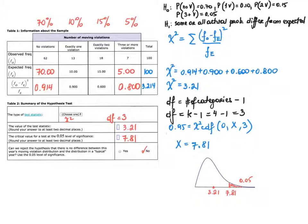The next question asks for the critical value. Just as you have found critical values using Z and T distributions, here you find a critical value corresponding to the 5% level of significance. Remember that the chi-square distribution is not symmetric, and you always have a right-tail setup. There is 5% of data in the critical region, and we need to find the chi-square value separating the acceptance region from the rejection region. The test statistic is 3.21.